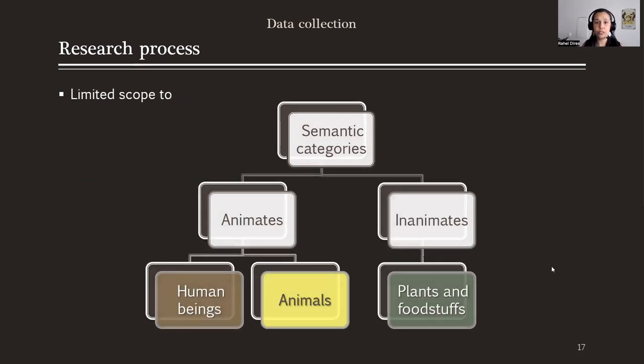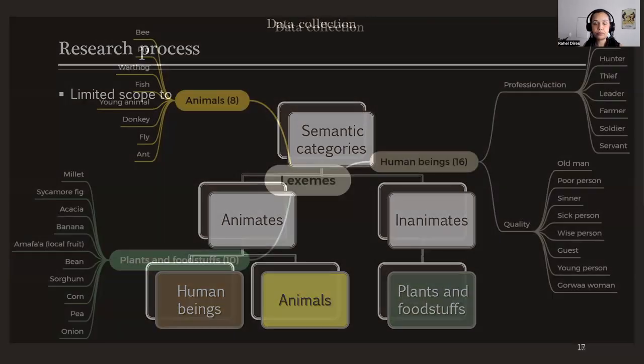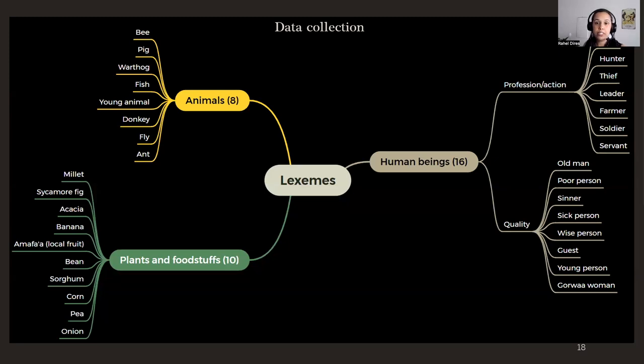I had to limit my scope to a few semantic categories. For animates, I looked for human beings and animals; for inanimates, I looked for plants and foodstuffs. In the data collection, I asked about all of these nouns — 16 nouns for human beings divided into profession, action, and quality; eight nouns for animals; and 10 nouns for plants and foodstuffs.